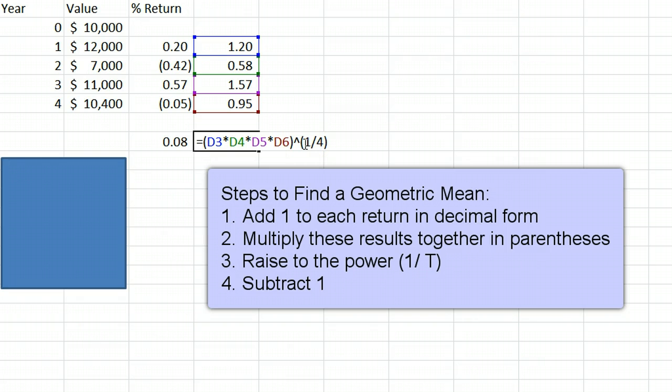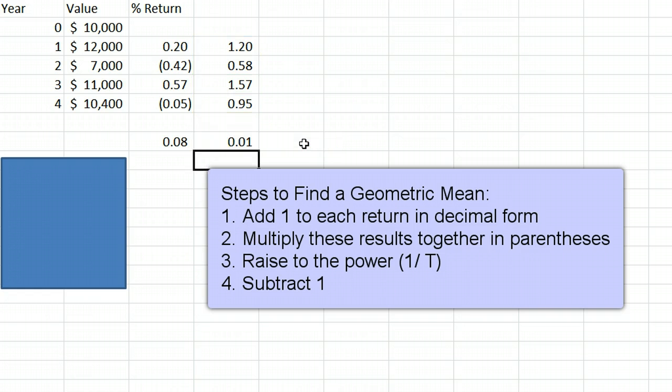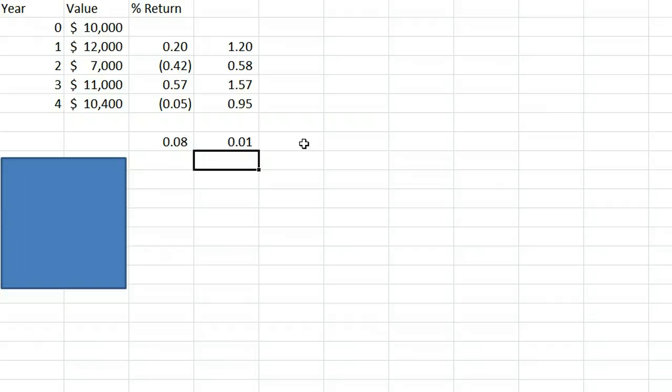Finally, subtract 1. This gives us a result of 0.01 or 1%, which we can see makes much more sense. We've made $400 over four years, or $100 a year, from a starting value of $10,000, and $100 is in fact 1% of $10,000.